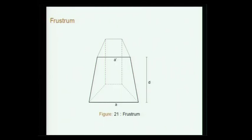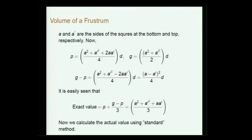A frustrum tapers from base side a to top side a', over depth d. Practical volume P = ((a+a')/2)²·d, and gross volume G = (a²+a'²)/2·d. The exact value is P + (G−P)/3. One can show that G − P = (a−a')²·d/2, and the exact value turns out to be (a²+a'²+a·a')·d/3, which matches the standard result for the volume of a frustrum.